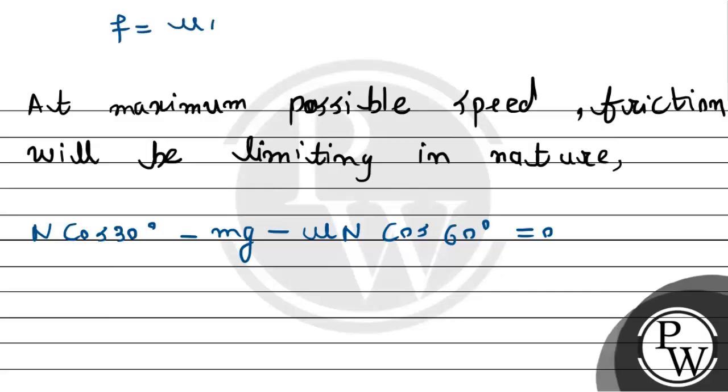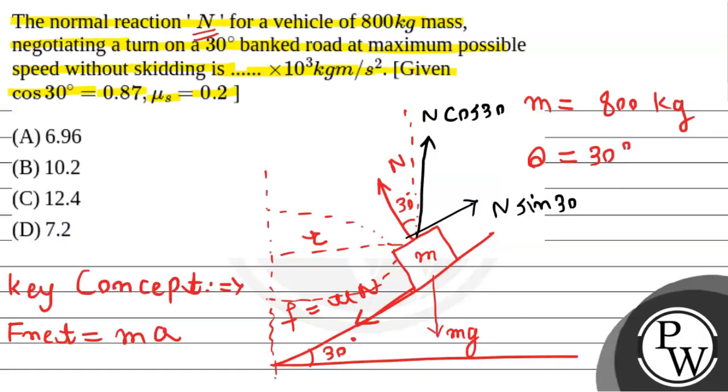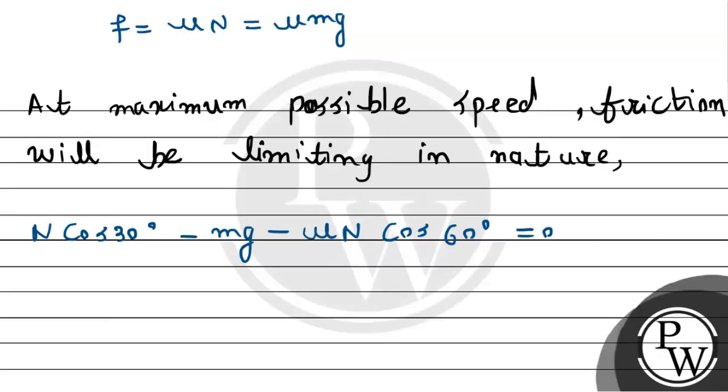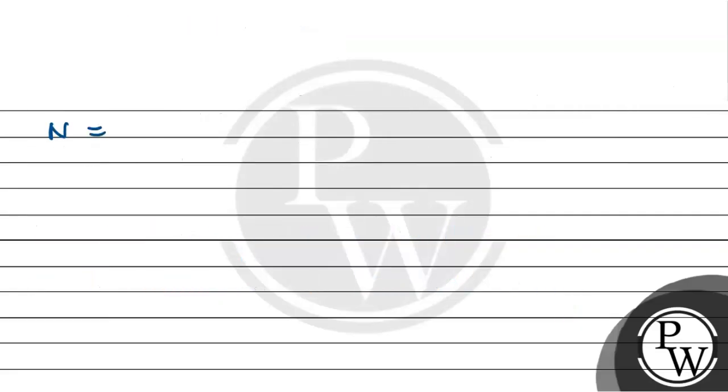We remember that the friction force is given by mu times N. The friction force is slant along the line, so it will have vertical and horizontal components. The vertical component in the downward direction will be mu N cosine 60 degrees. If this angle is 30 degrees, then the other angle will be 60 degrees. Now we simplify this by taking normal reaction force N as common: N times (cosine 30 minus mu cosine 60) equals mg. So the normal reaction force formula becomes N equals mg divided by (cosine 30 minus mu cosine 60).